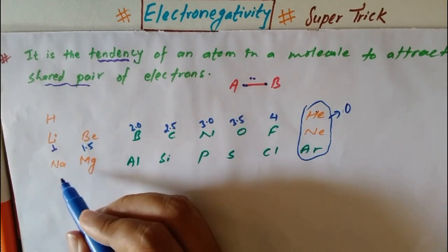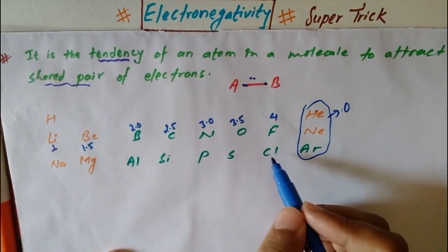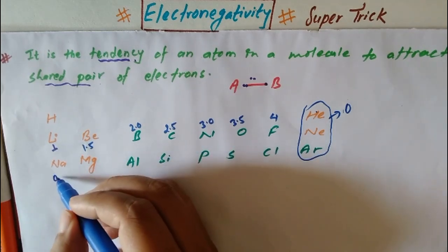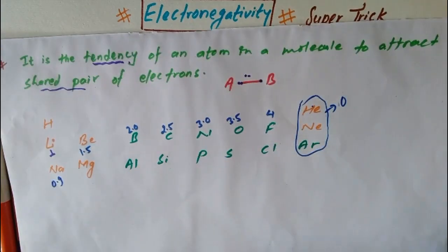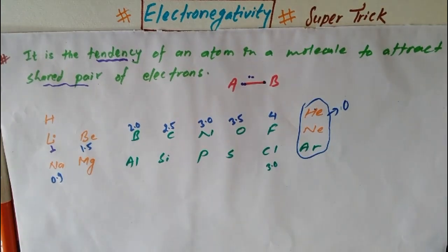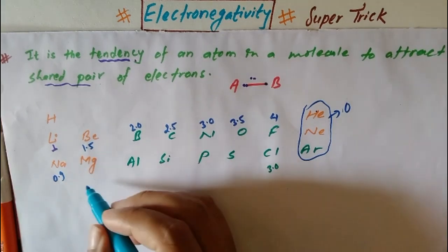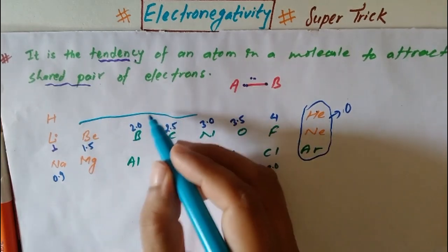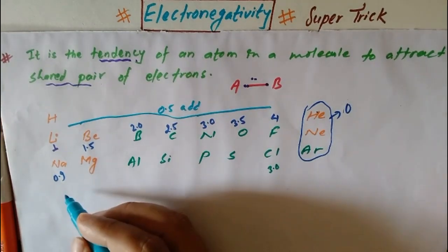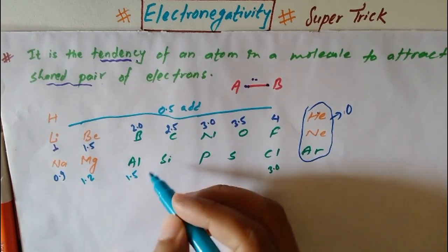Now for period 3: sodium, magnesium, aluminum, silicon, phosphorus, sulfur, chlorine. Sodium electronegativity is 0.9. Lithium is 1.0 and sodium is 0.9. Adding 0.3 increments: magnesium is 1.2, aluminum is 1.5.